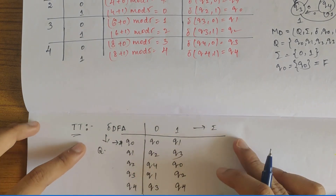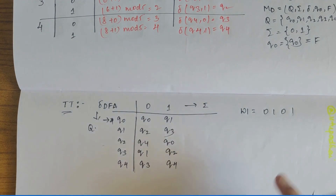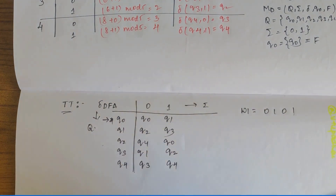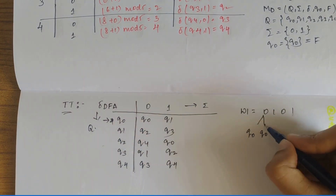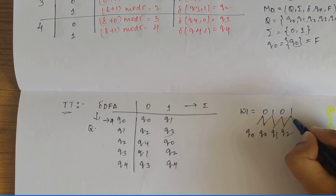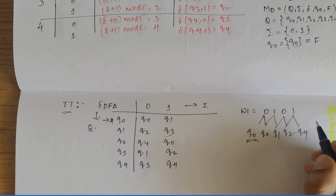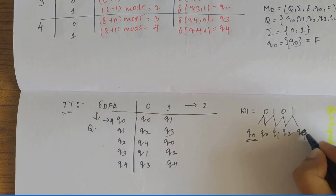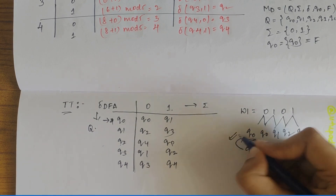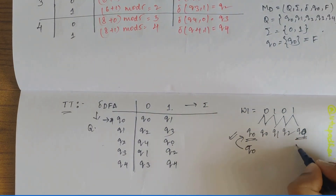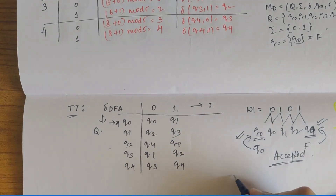Let's take an example: w1 = 0101. Starting at Q0: Q0 on 0 → Q0, Q0 on 1 → Q1, Q1 on 0 → Q2, Q2 on 1 → Q0. We end at Q0 which is the final state, so this word is accepted. Note that 0101 in decimal is 5, which is indeed divisible by 5.